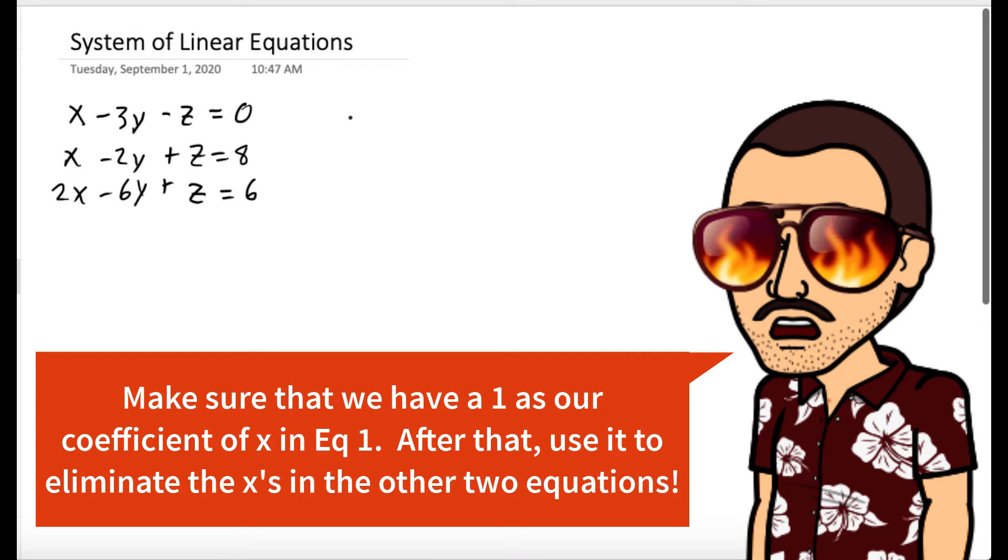So we first want to check, make sure we have a coefficient of 1 for x in our top row, and we do. So now we could use that top row, equation 1, to eliminate the x in the second and third equations. So we could multiply negative 1 to equation 1 and add it to equation 2. You'll see that'll eliminate the x.